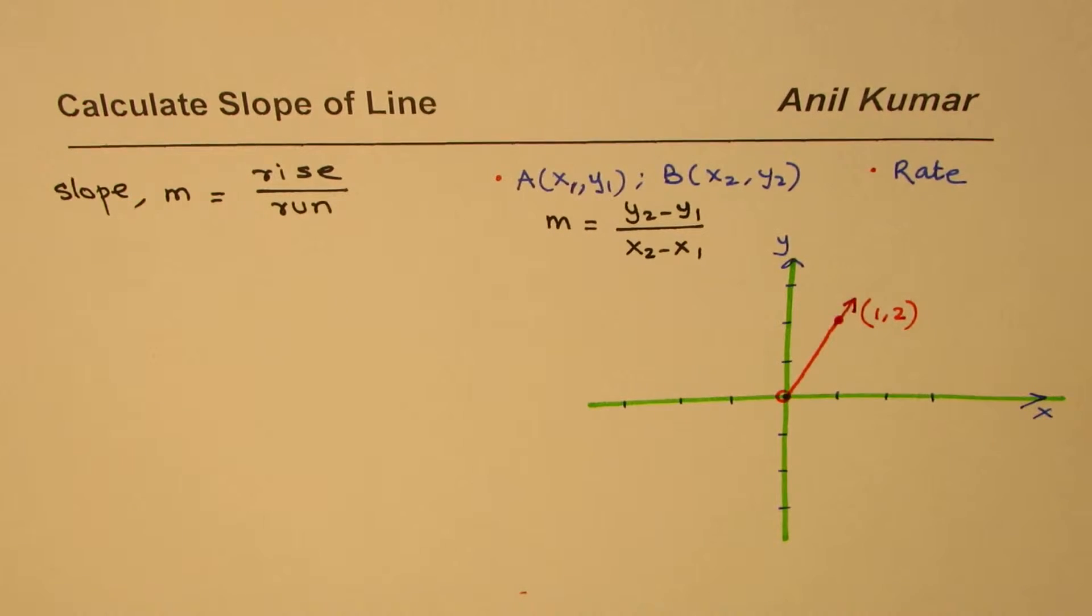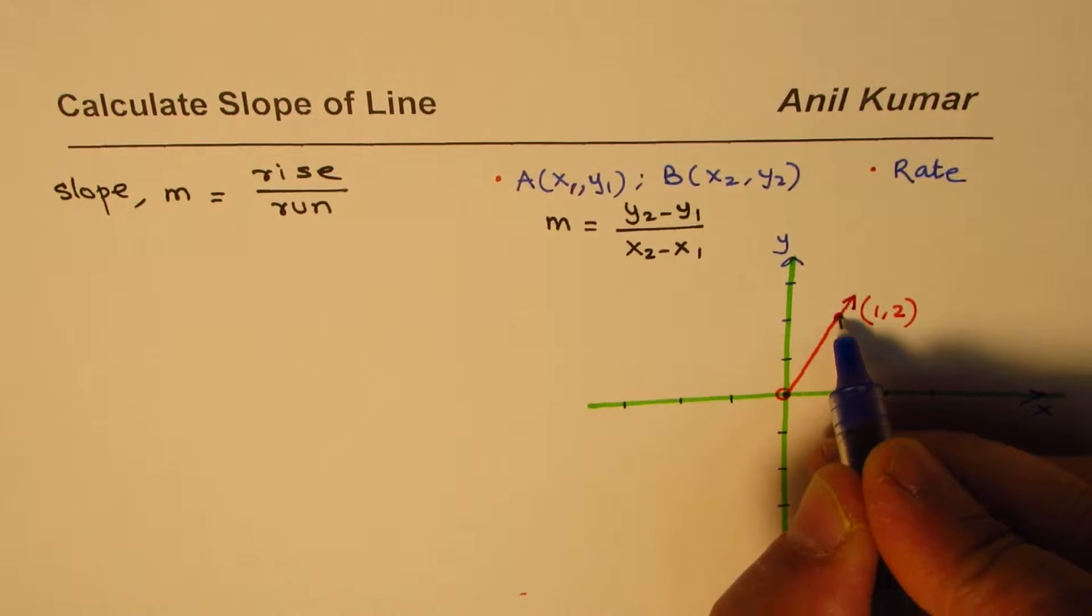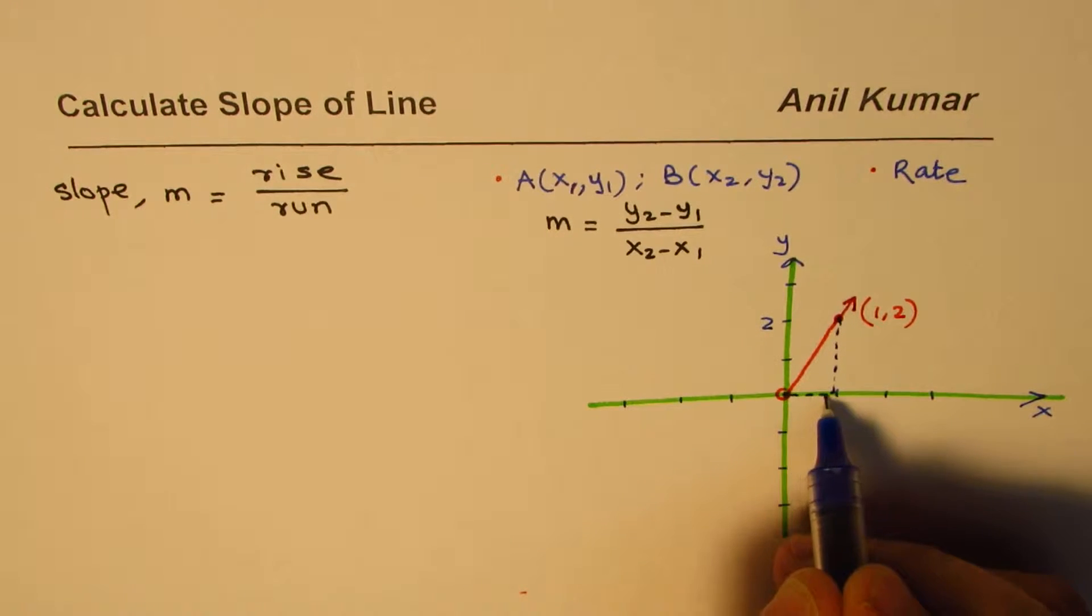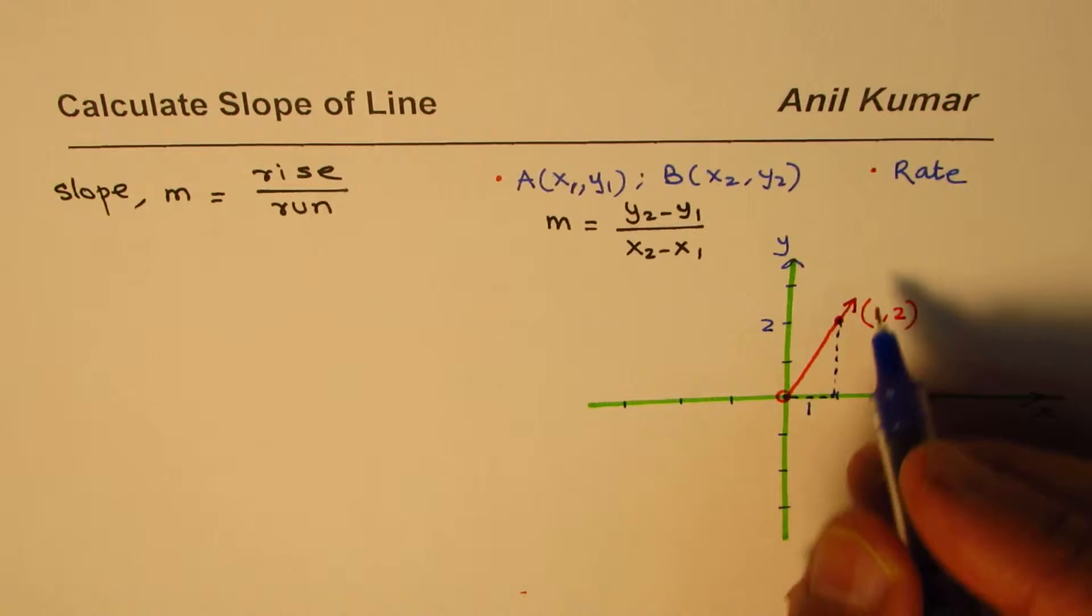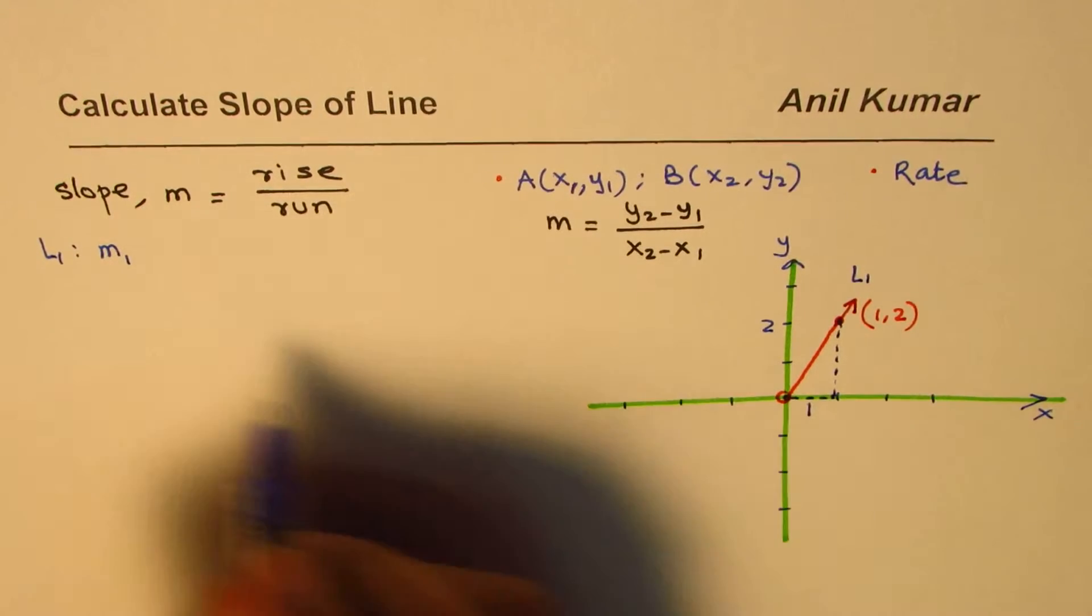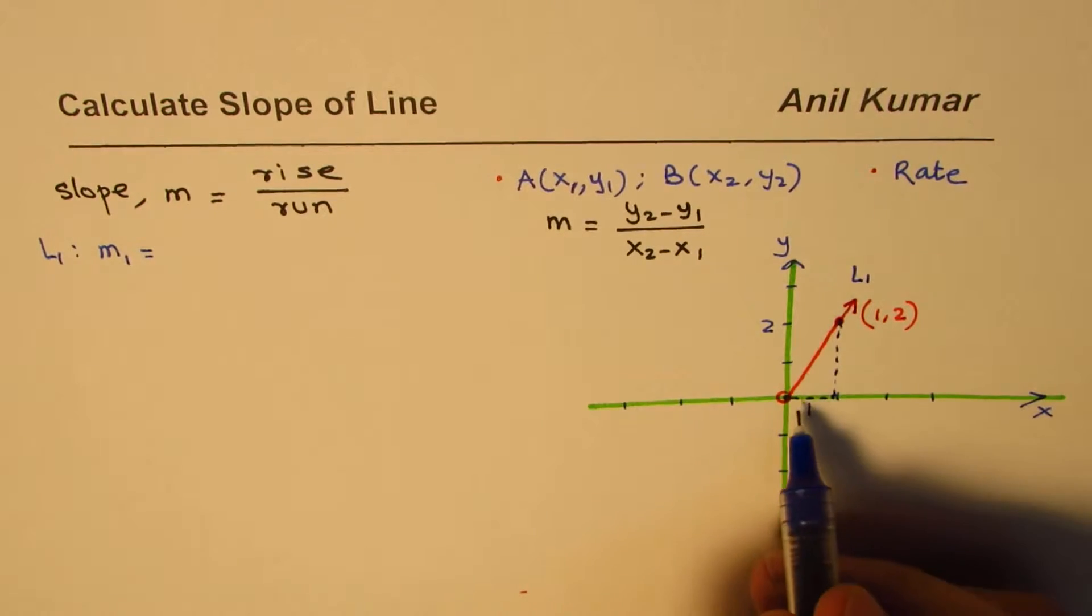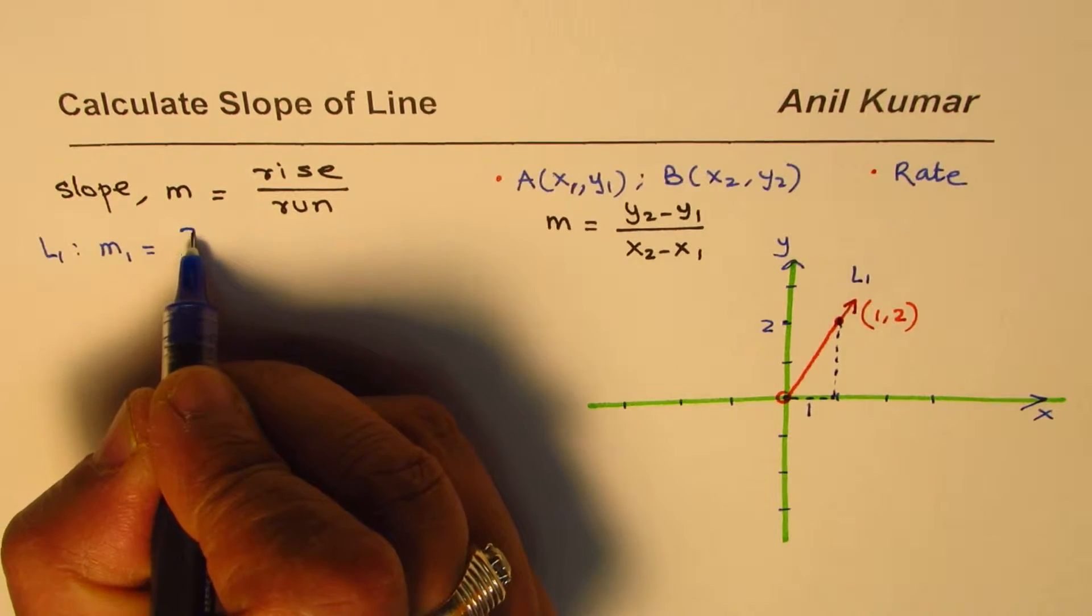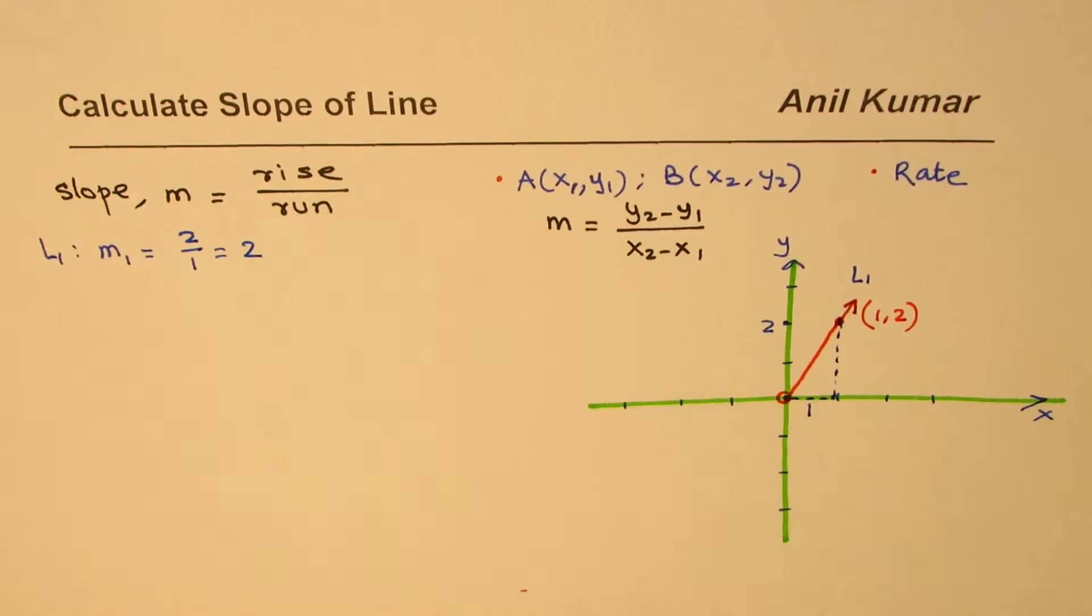Now, what is the slope of this line? From rise over run, we can drop a perpendicular. You notice that the rise is the y value, 2, and the run is the x value of 1. So our line 1 has a slope, let's call m1, equals to rise over run. In this case, rise is 2 units and run is 1, so 2 over 1, or just 2. That is how you can very easily find the slope of a line.